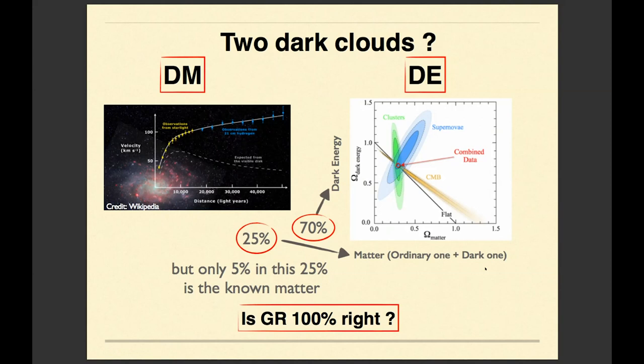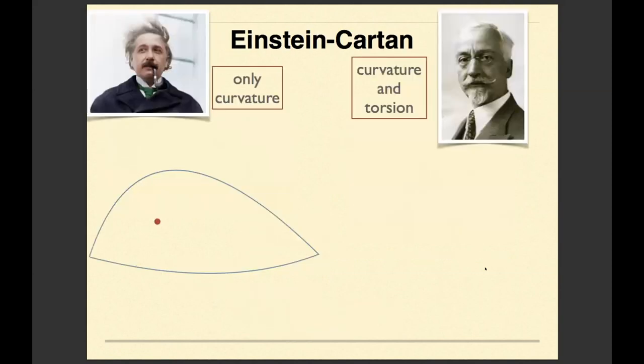And many theories actually were proposed. And I will talk about one theory which, exactly as general relativity, has a geometric origin.